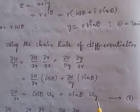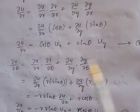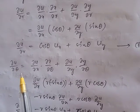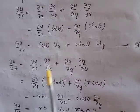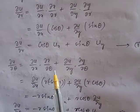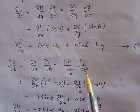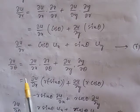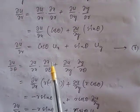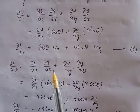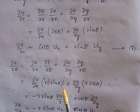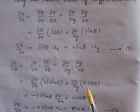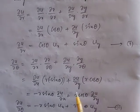Similarly, for the derivative with respect to θ: ∂u/∂θ = (∂u/∂x)·(∂x/∂θ) + (∂u/∂y)·(∂y/∂θ). Now x = r·cosθ, so with respect to θ (r is constant): ∂x/∂θ = -r·sinθ. And y = r·sinθ, so ∂y/∂θ = r·cosθ.